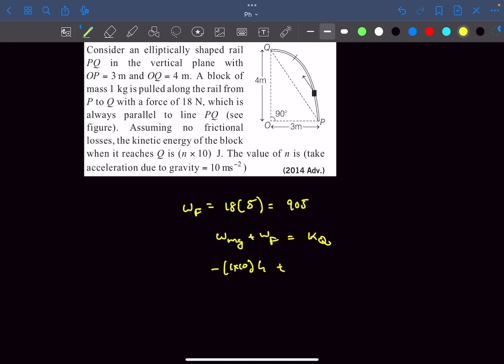The magnitude of the work will be mg which is 1 into 10 times the vertical displacement which is 4, and the work done by force F is 90 joules. So the kinetic energy of the block at point Q comes out to be 50 joules. So the answer for n will be 5. That's it for this video guys. I'll bring more PYQs in the upcoming videos. Make sure you like and subscribe to get the notification for those videos. Thanks for watching.